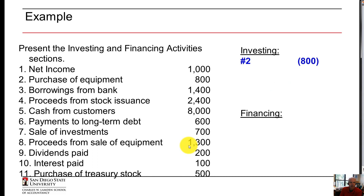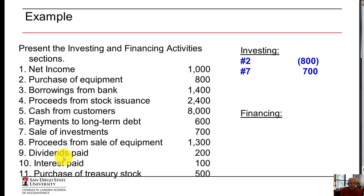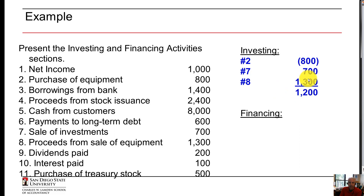In the investing section: purchase of equipment is an outflow — negative 800. A sale of investment is also investing — we sold it, so it's an inflow, shown as a positive number. Proceeds from the sale of equipment would also be an inflow. We would therefore have a net inflow of $1,200 if we added these three up.